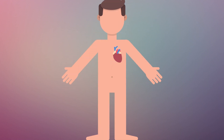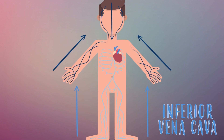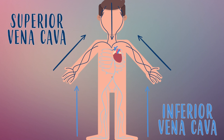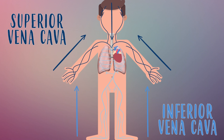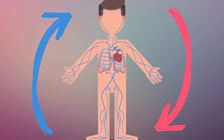The blood that returns from the lower part of the body flows through the inferior vena cava. The one that returns from the arms and head travels through the superior vena cava. All that blood reaches the lungs where it gets oxygenated and returns back to the heart. There the journey starts again.